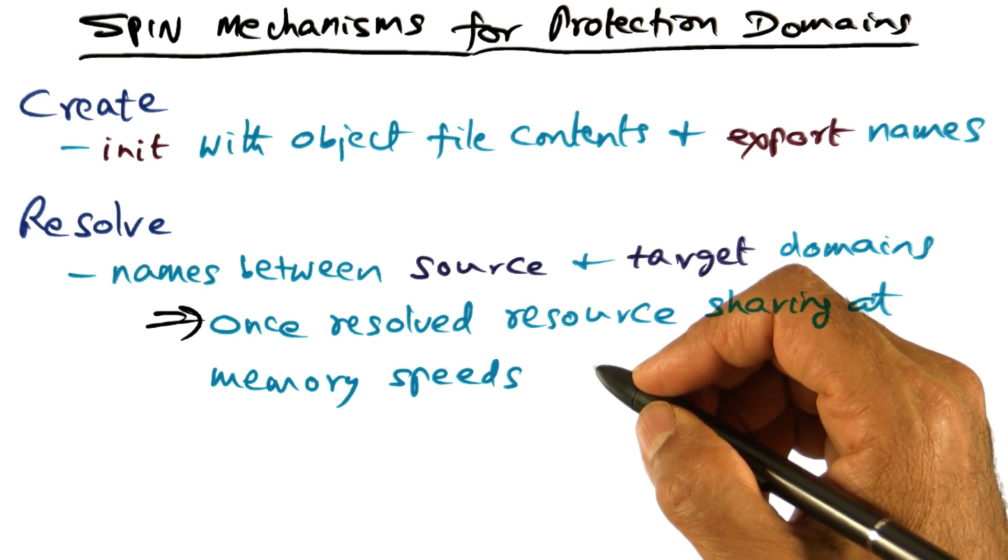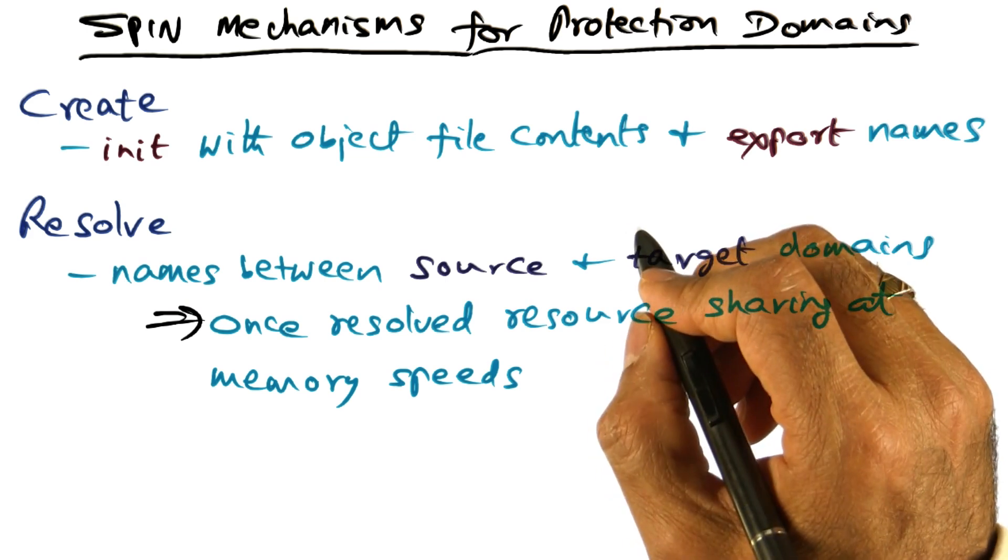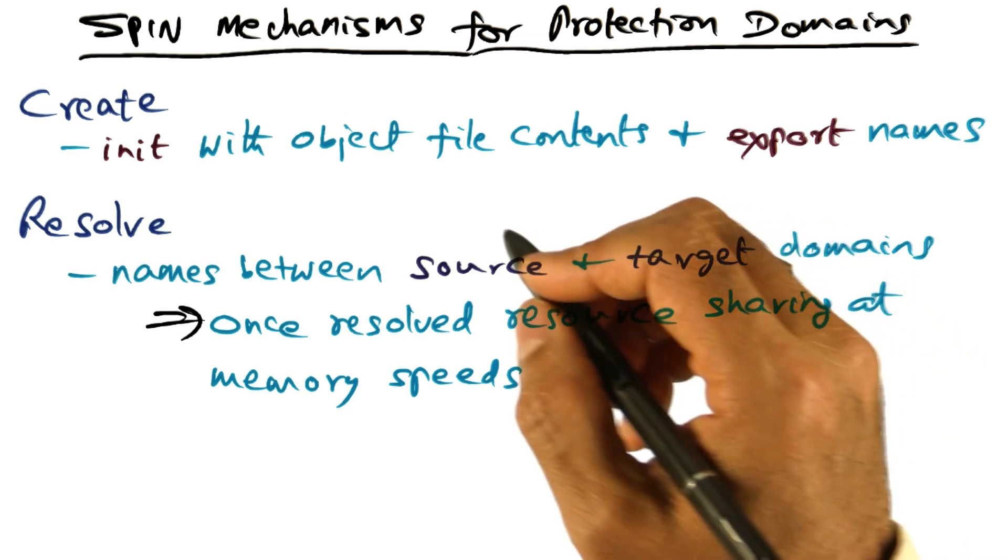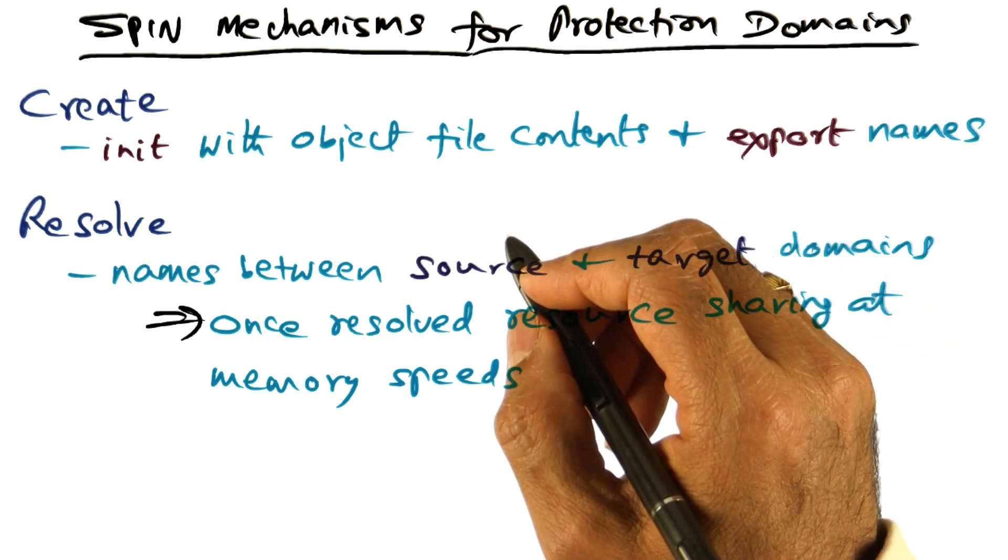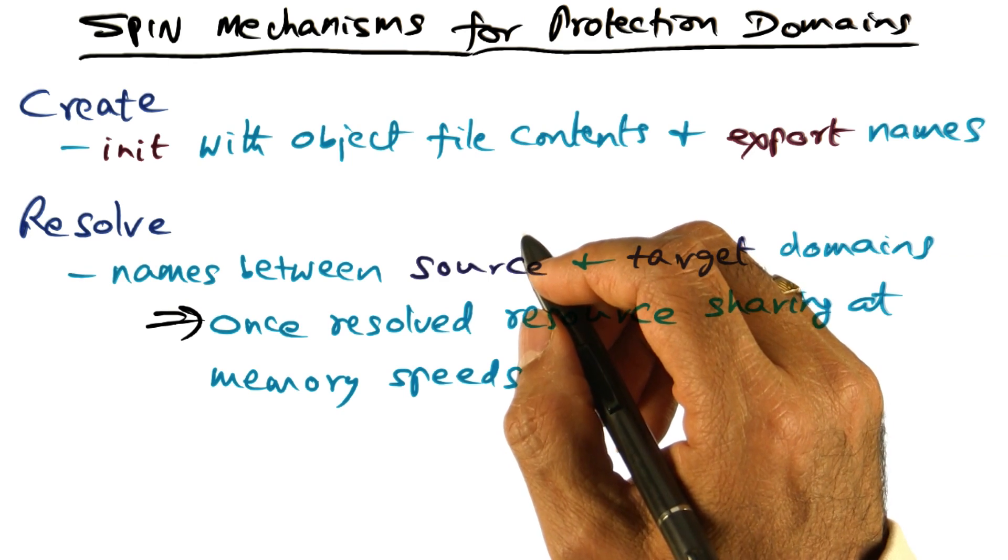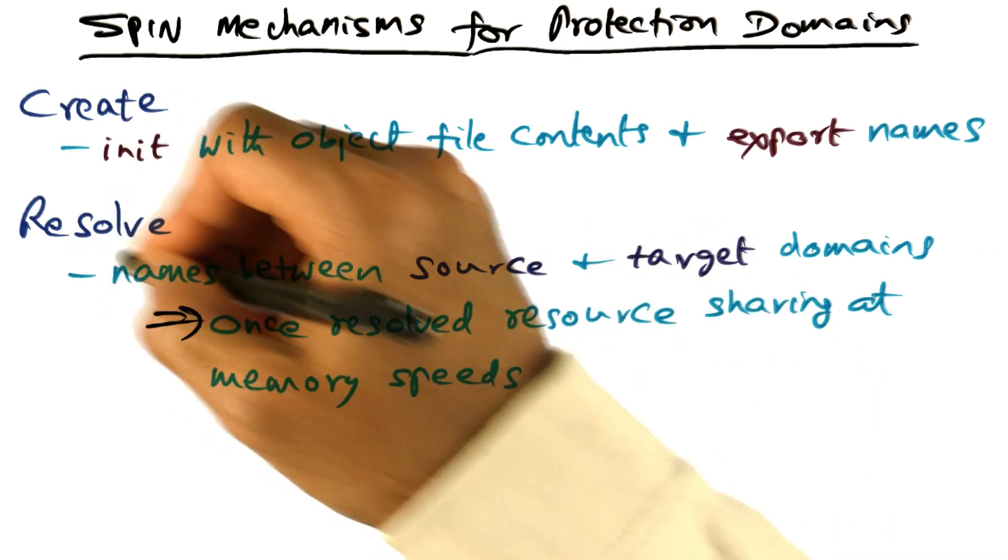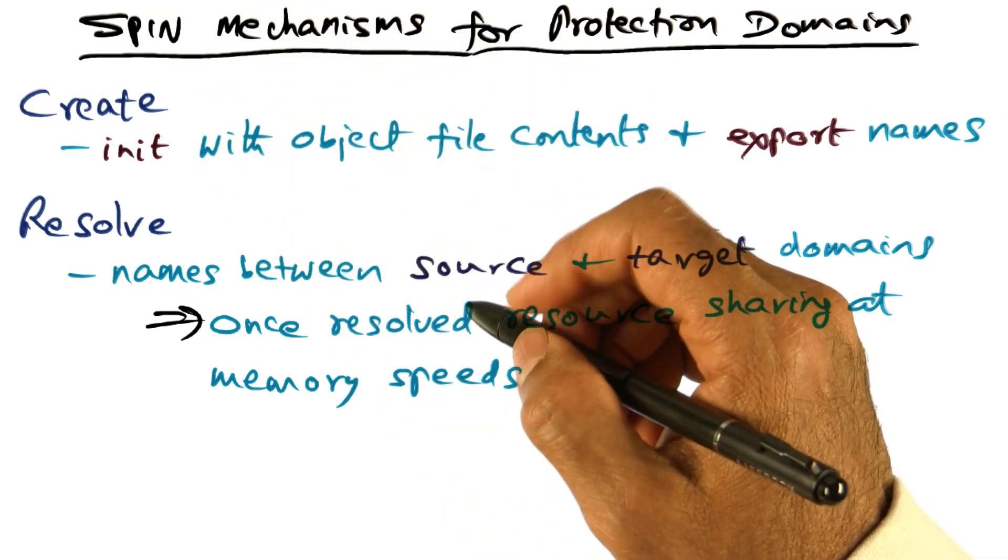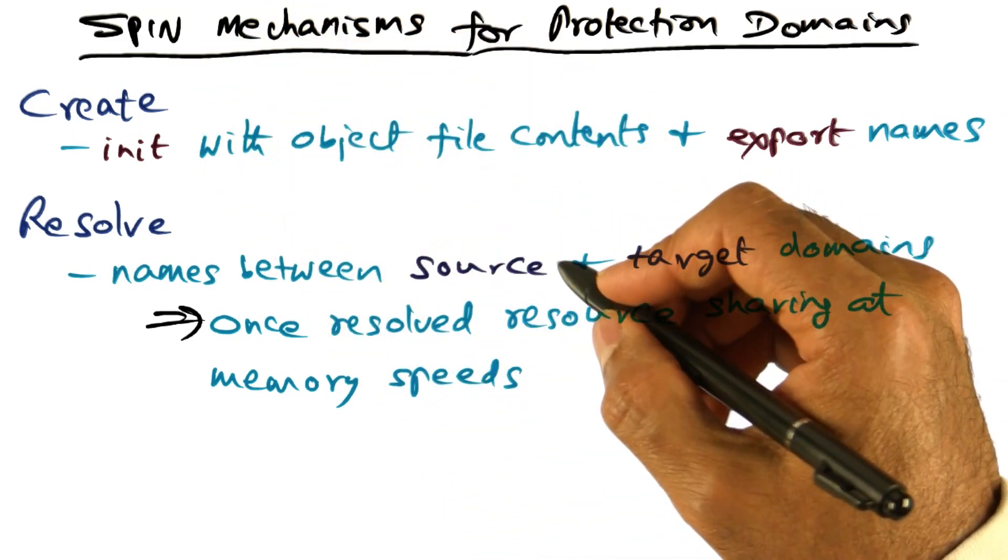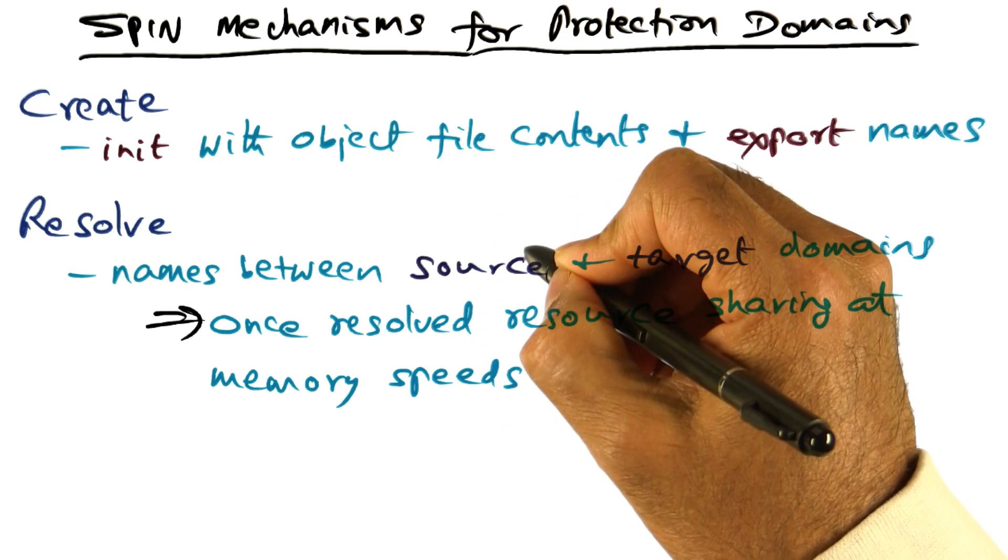then you go through a link phase of the compiler where the linker resolves the names that are being used by one object file with the names defined in another object file. That's the same thing the resolve mechanism of SPIN does—it resolves the names being used in the source,